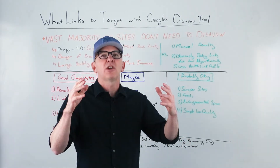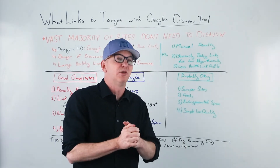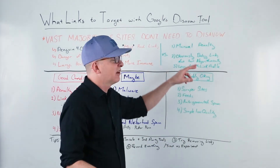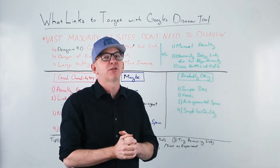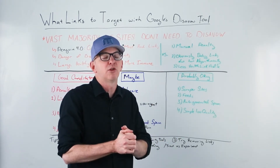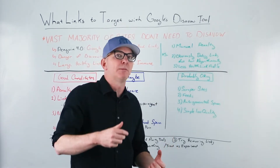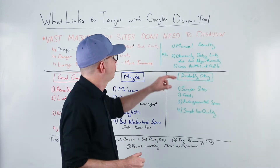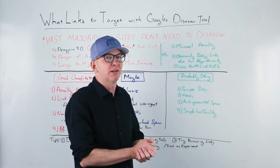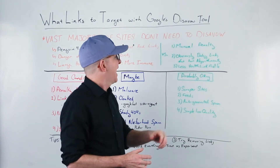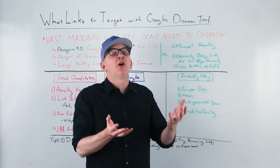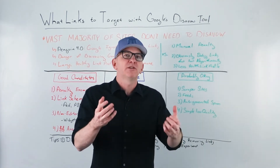With those disclaimers out of the way, let's talk about situations where you're going to want to consider using the disavow tool. Obviously, if you have a manual penalty — those have decreased significantly since Penguin 4.0 but still exist. There's also a conversation with Marie Haynes in a Google Hangout where John Mueller said that if you want to disavow obviously dodgy links that could be hurting you algorithmically, it might help Google trust your link profile a little more — especially if your link profile isn't that healthy in the first place.